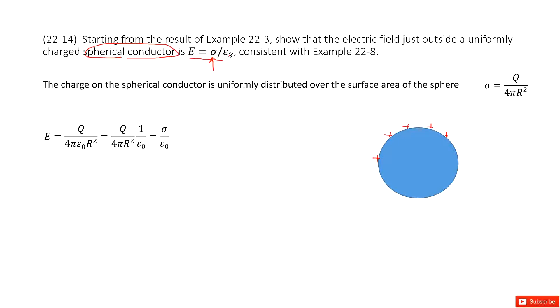What is ε₀? A constant. So it looks like we need to prove E equals σ divided by ε₀. But normally, how could we find the electric field for the conductor? We consider it as a point charge. Agree? This is what we learned in Coulomb's law: Q divided by 4πε₀r². This is what we did in previous problems.